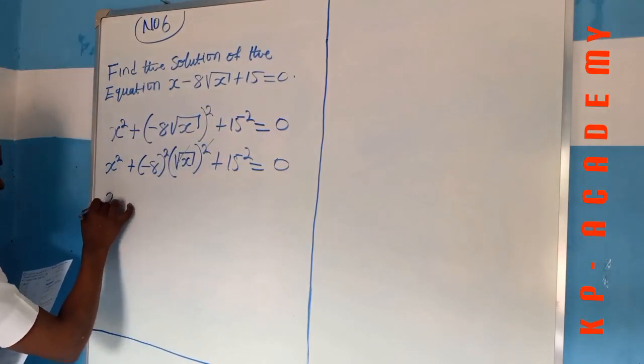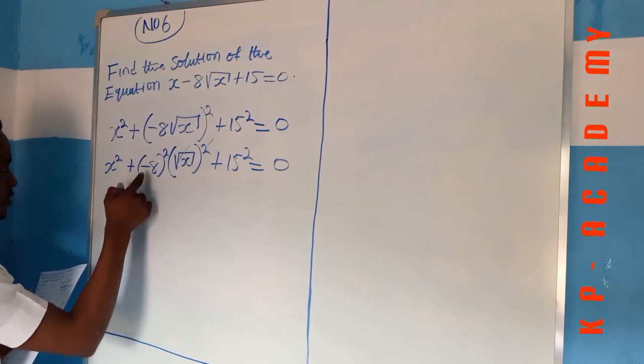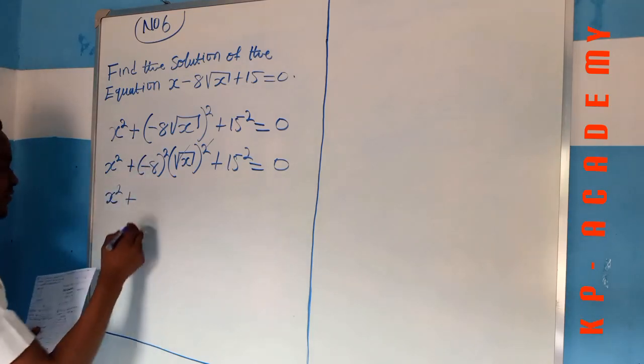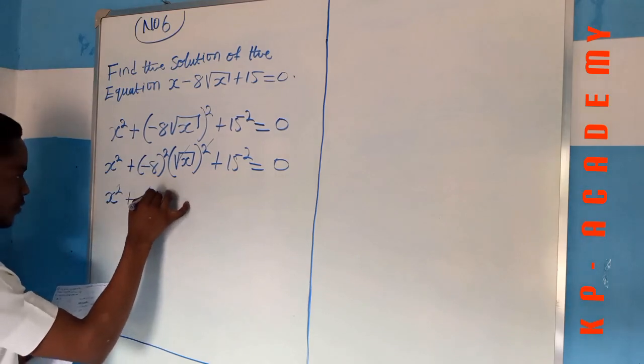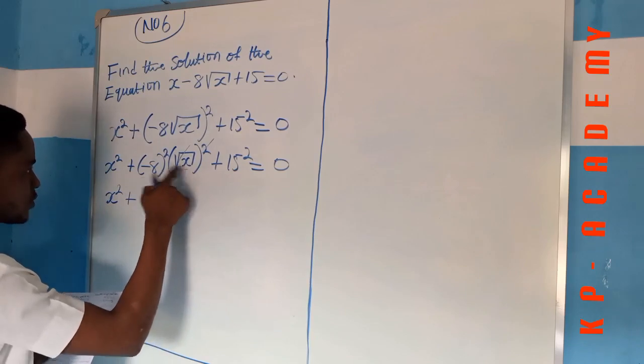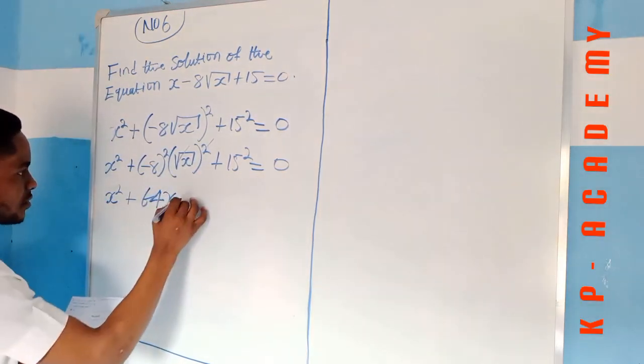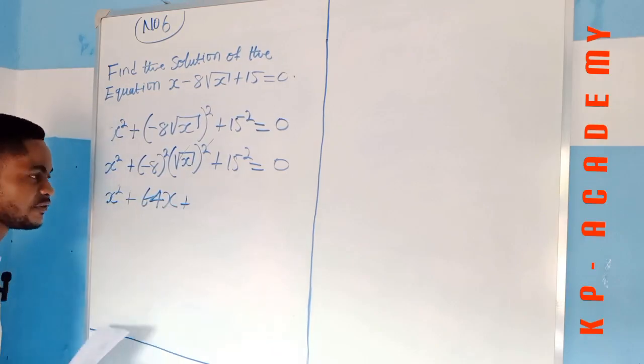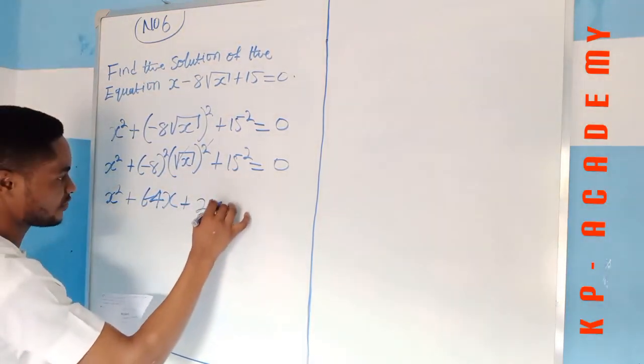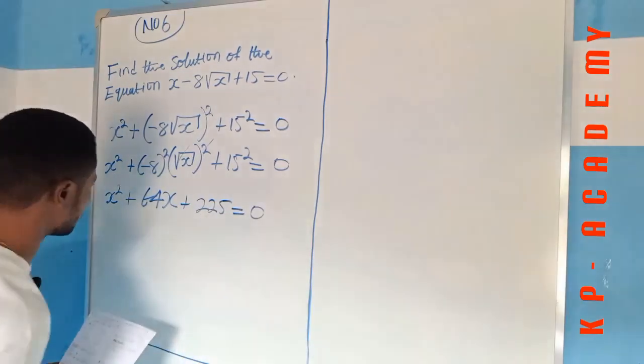Now we have x squared plus 64 times x plus 225 equal to 0. The square of minus 8 squared is minus 8 times minus 8 which gives us positive 64. This one will come out as x, and 15 times 15 is 225.